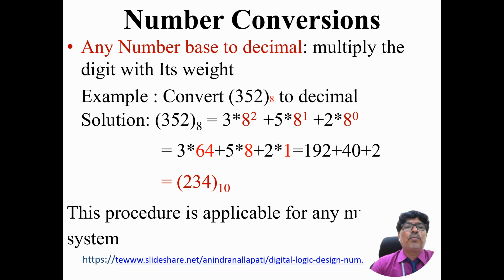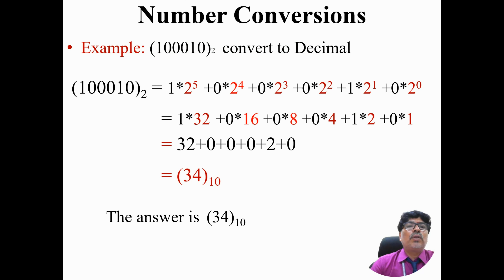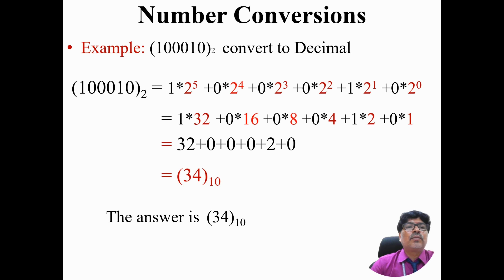The same procedure applies for base 2. If we want to convert 100010 of base 2 to decimal, we apply positional weights: 2 power 0, 2 power 1, 2 power 2, 2 power 3, 2 power 4, and 2 power 5. Multiplying each digit gives 32 + 0 + 0 + 0 + 2 + 0 = 34 base 10. So 100010 of base 2 equals 34 in decimal.